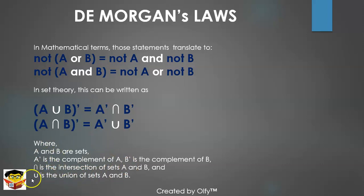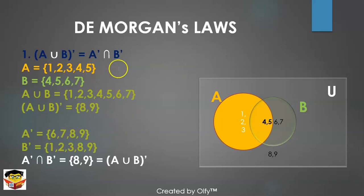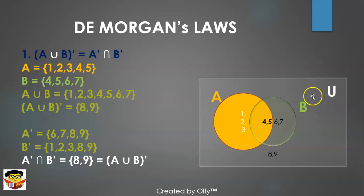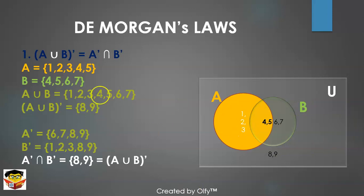Let's prove the first statement through Venn diagrams: (A∪B)' = A' ∩ B'. Here we have the universal set containing sets A and B, along with elements eight and nine which are outside of A and B but still part of the universe. Set A consists of elements one, two, three, four, and five, and set B consists of elements four, five, six, and seven.